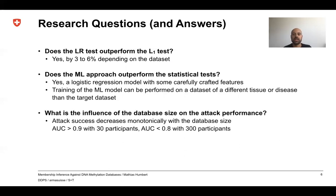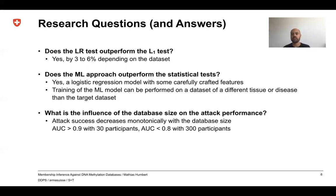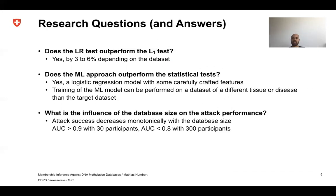Third, we examined the influence of database size on attack performance. The attack success decreases monotonically with database size, which is expected, but the decrease is rather slow. We observed an AUC greater than 0.9 with only 30 participants, and the AUC only drops below 0.8 when the database contains more than 300 participants.